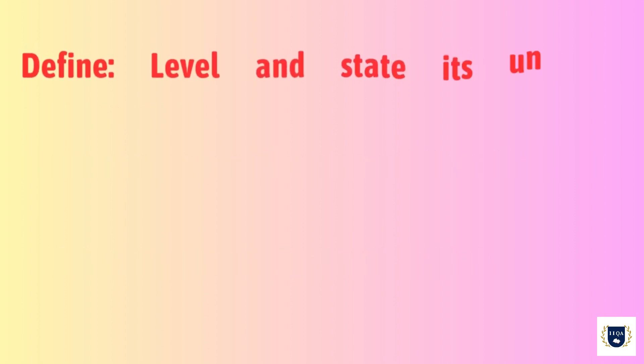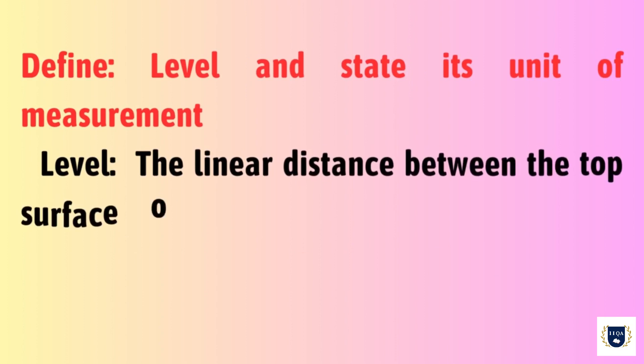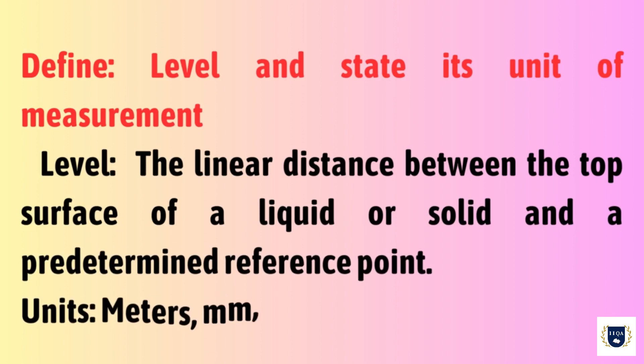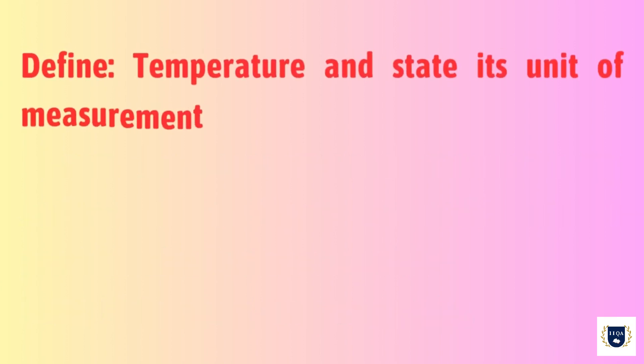Define Level and State its Unit of Measurement. Level: The linear distance between the top surface of a liquid or solid and a predetermined reference point. Units: Meters, Millimeters, Centimeters, Percentage. Define Temperature and State its Unit of Measurement.